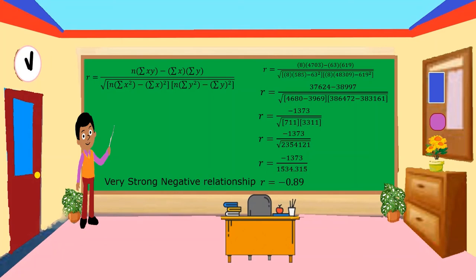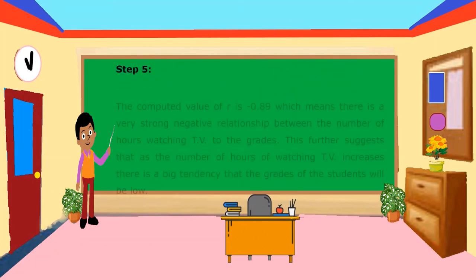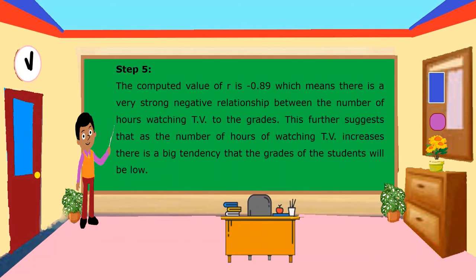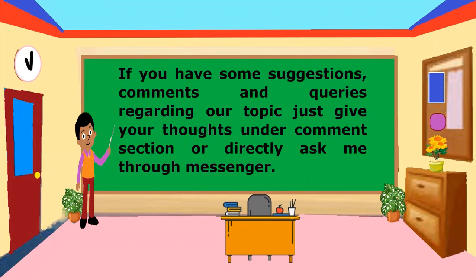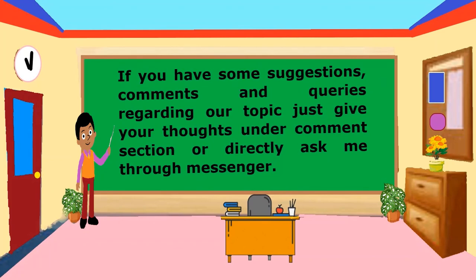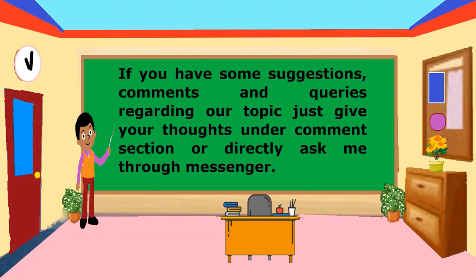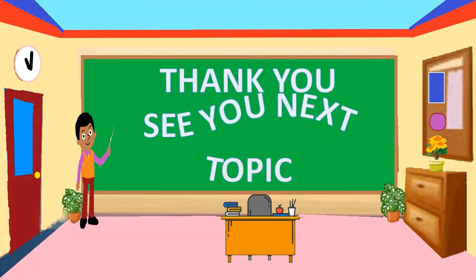This is a very strong negative relationship. Step 5 — the computed value of R is negative 0.89, which means there is a very strong negative relationship between the number of hours of watching TV and the grades. This further suggests that as the number of hours of watching TV increases, there is a big tendency that the grades of the students will be low. If you have suggestions, comments, and queries regarding our topic, just leave your thoughts in the comment section or ask me through messenger. Thank you and see you next topic.